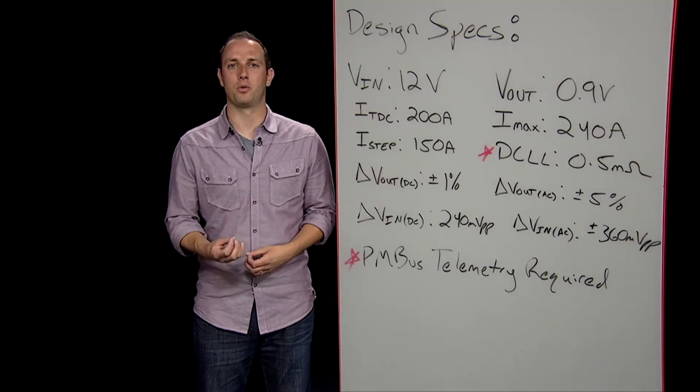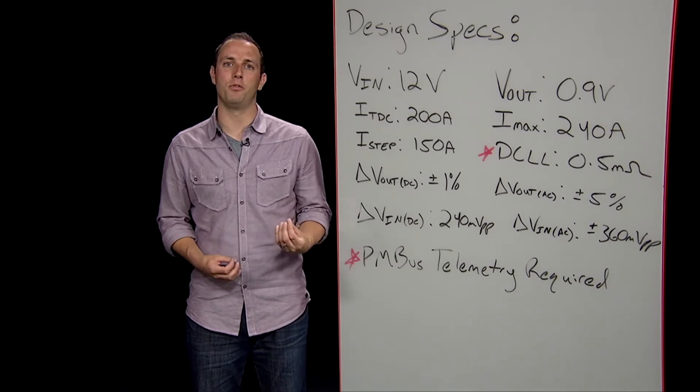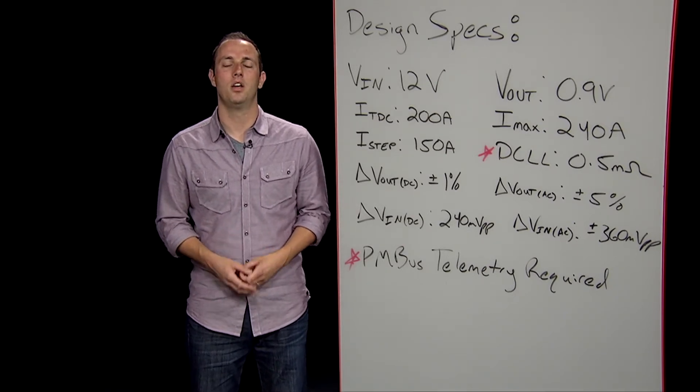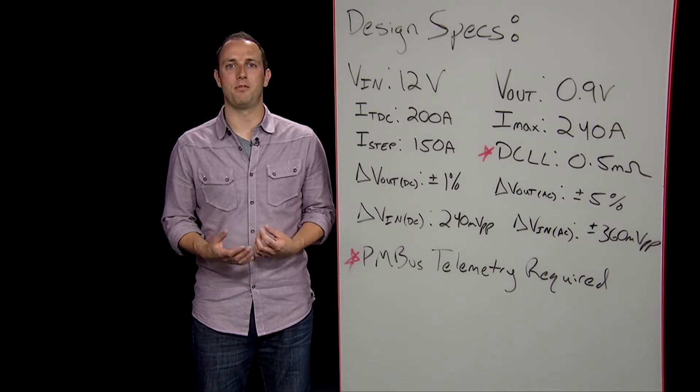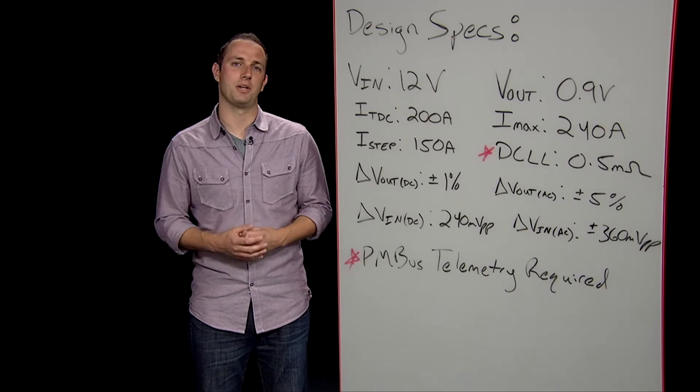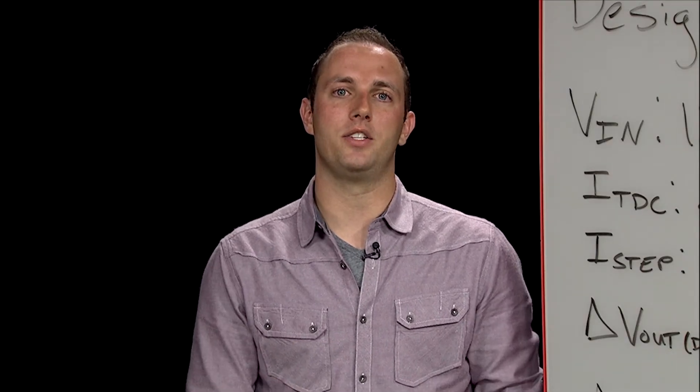In my first video, I gave you an overview of what multi-phase buck regulators are and what applications they're good for. In this video, I'll be working through a six-phase design for powering the core voltage of a networking ASIC. Once again, this video follows along with a new app note I released earlier this year that covers multi-phase design in more detail than we'll talk about today. So let's get cracking on the design, shall we?